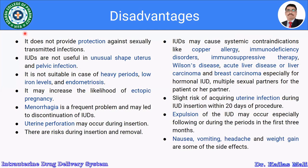Disadvantages of intrauterine drug delivery systems: IUDs do not provide protection against sexually transmitted infections as condoms do. They are not useful in cases of unusual uterus shape or pelvic infection. They are not suitable in cases of heavy periods, low iron levels, and endometriosis. They may increase the likelihood of ectopic pregnancy. Menorrhagia is a frequent problem and may lead to discontinuation due to abdominal pain.